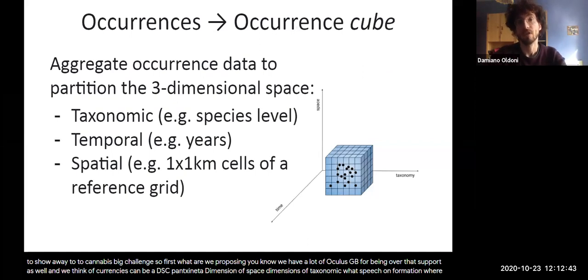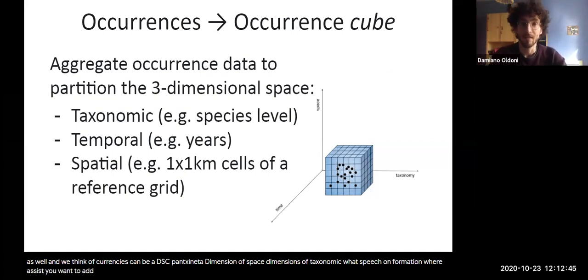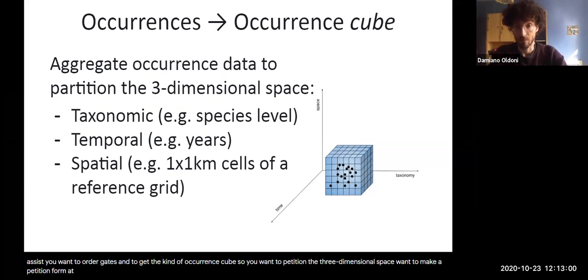So from occurrences, you want to aggregate and to get a kind of occurrence cube, so you want to partition the three-dimensional space. For example, you want to make a partition at species level, at years level, and for example using a reference grid at one by one kilometer cells. Just an example.